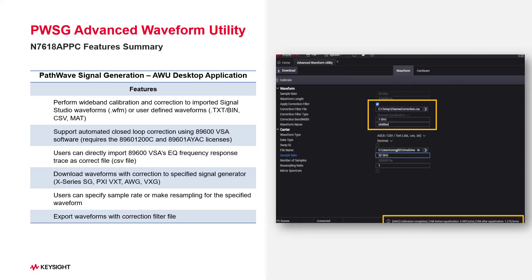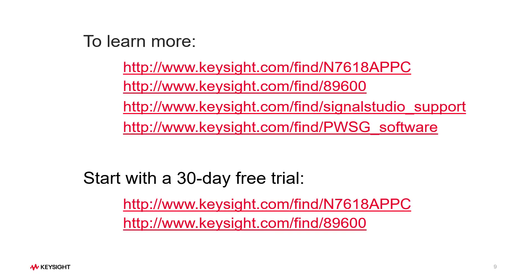In summary, PWSGAW gives you flexibility and good quality in signal generation. It supports several waveform types such as Keysight Signal Studio waveform and user-defined waveforms like CSV or MATLAB files. All these waveforms can be exported with a correction file to a new waveform, which can be downloaded to a specified signal generator for playback. With the closed-loop calibration method, you can get better performance especially for wideband signal measurements. We are constantly working to update and enhance the software. To learn more and to download a free trial, visit us at these websites. Thanks for watching.